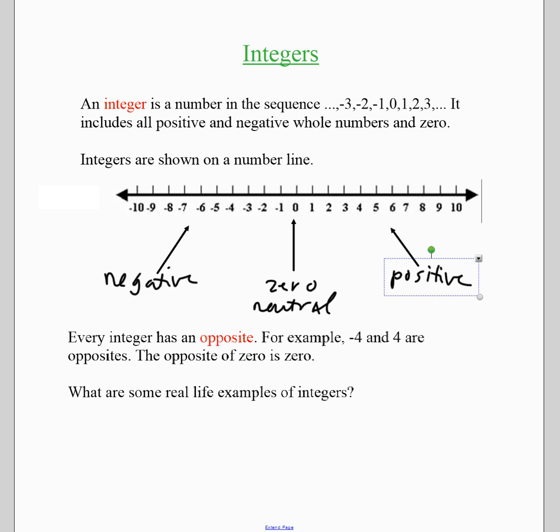Another thing for you to know about integers is every integer has an opposite. So for example, the opposite of four is negative four. The opposite of zero is zero. So zero is kind of the exception to that rule, although you can say the opposite of zero is zero. The opposite of eight would be negative eight.